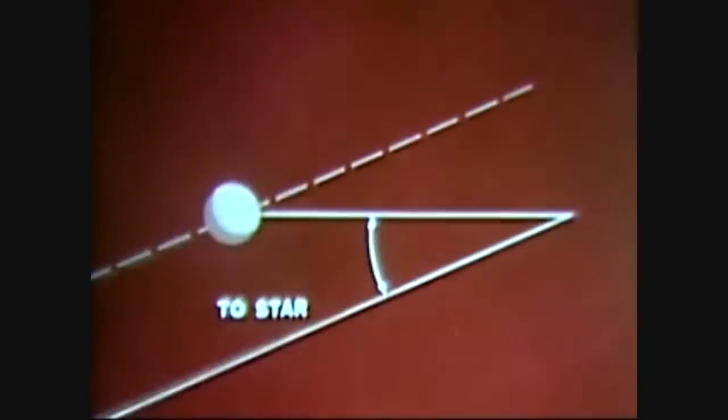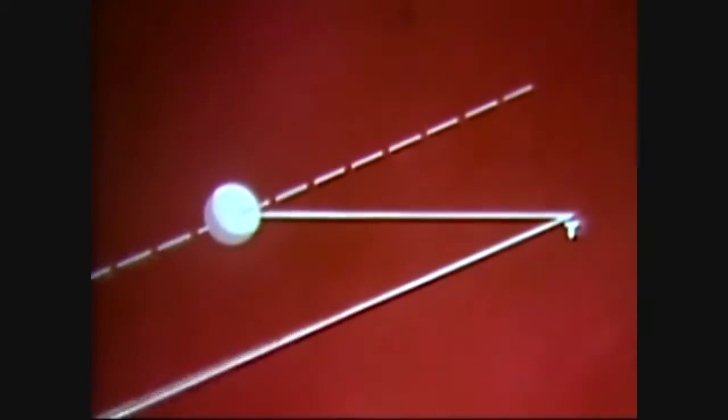With this instrument, the astronaut measures precisely the angle between a planet and a known star. This is recorded along with the exact time of the sighting.